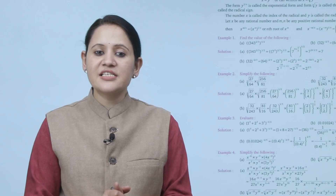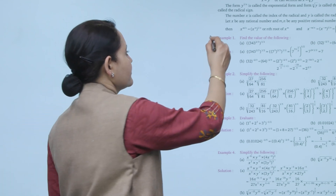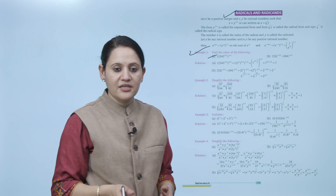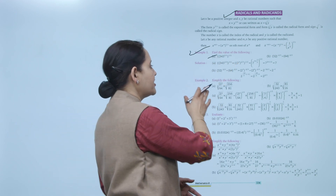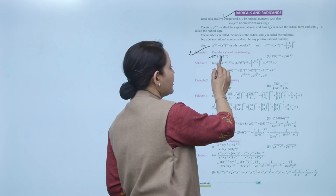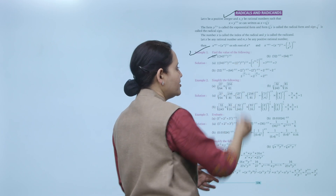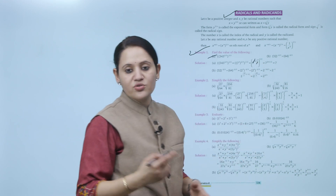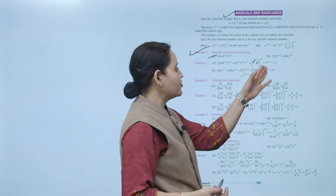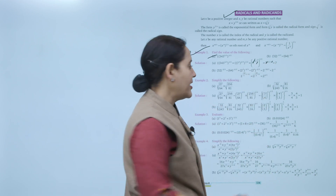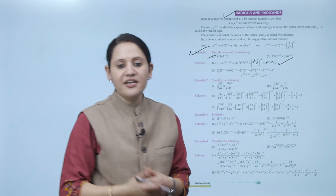Now let's take an example: find the value of (343^(2/3))^(1/2). We know 343 can be written as 7 to the power 3. So this becomes (7^3)^(2/3)^(1/2). Solving the inner bracket: 3 and 3 cancel, giving 7^2. Then multiplying by 1/2: 2 and 2 cancel, giving 7 to the power 1, which equals 7. That is our answer.